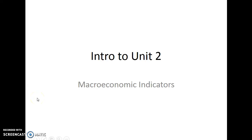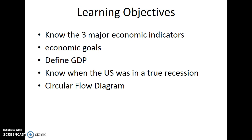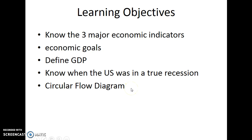This screencast is an introduction to our Unit 2 topic of macroeconomic indicators. We are going to talk about the three major economic indicators, the economic goals for these indicators, we will define GDP, look at the relationship of GDP and how you figure out when there is a true recession happening, and lastly we will look at the circular flow diagram from the macroeconomic perspective.